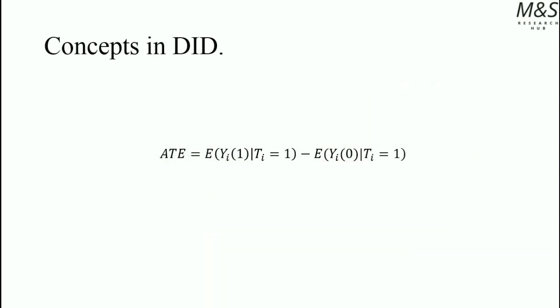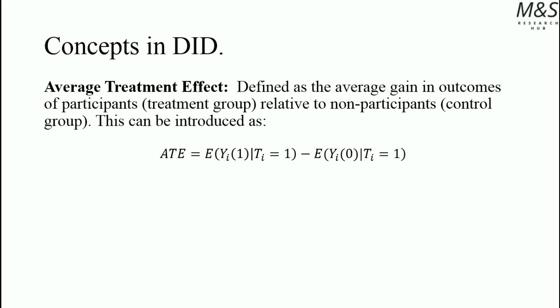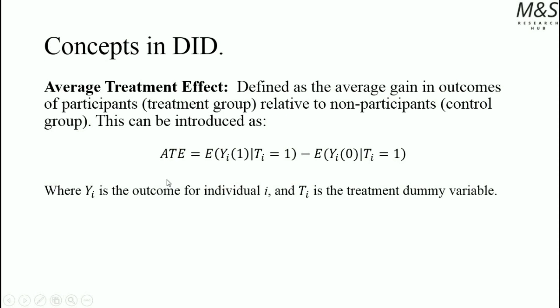Now we're introducing one of the most important concepts: the average treatment effect. It is defined as the average gain in outcomes of participants relative to non-participants. In impact evaluation, we normally use the treatment group relative to the control group. We can introduce the average treatment effect, ATE, as a difference in expected results. We define t as the treatment dummy variable, between 0 and 1: when t equals 1, the treatment has been given; when t equals 0, the treatment was not given. The expected result y_a(1) indicates the outcome for individual a when the treatment was given.